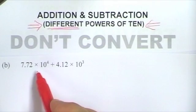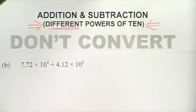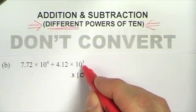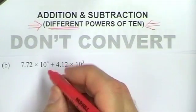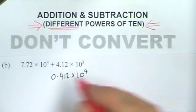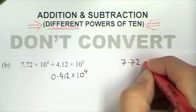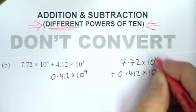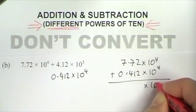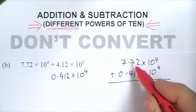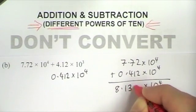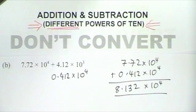In this next addition, I've got a times 10 to the 4 and a times 10 to the 3 — they're different, so I can't add them. I've got to make the smaller number into the highest power of 10, so that 10 to the 3 I've got to write as a times 10 to the 4. I've made the second part a power of 10 bigger, so the first part has to be a power of 10 smaller — that becomes 0.412. Now I can add 7.72 times 10 to the 4 and 0.412 times 10 to the 4, giving me 8.132 times 10 to the 4.